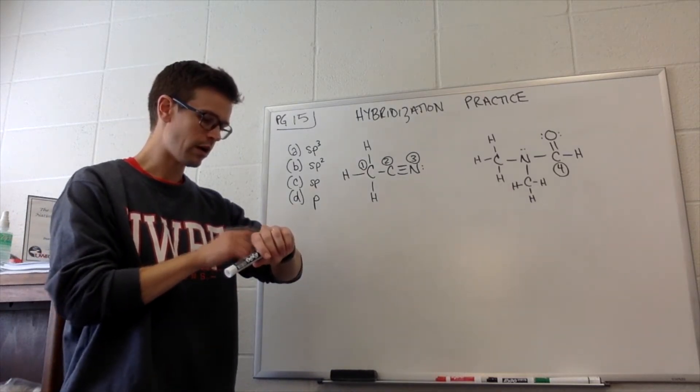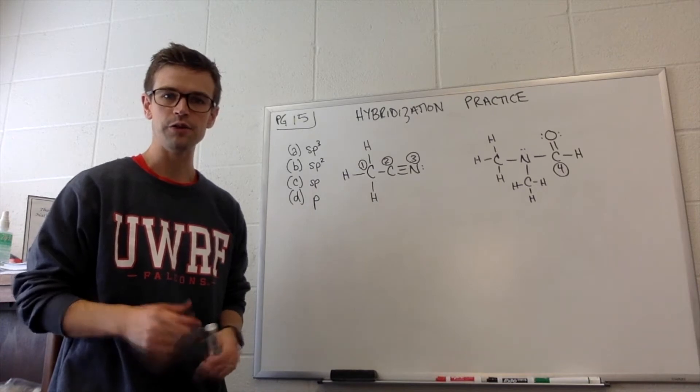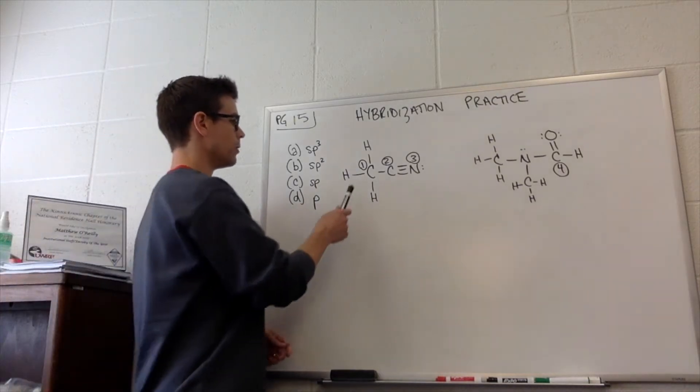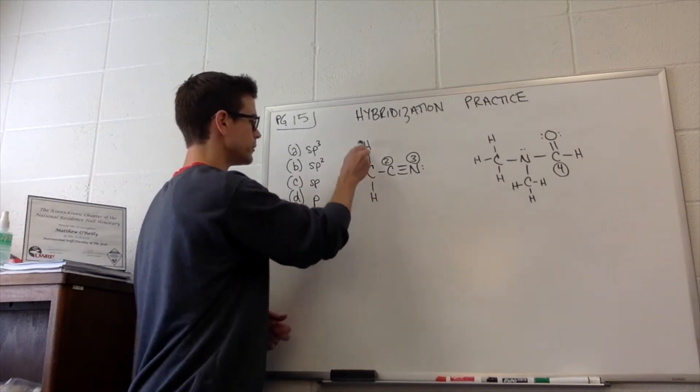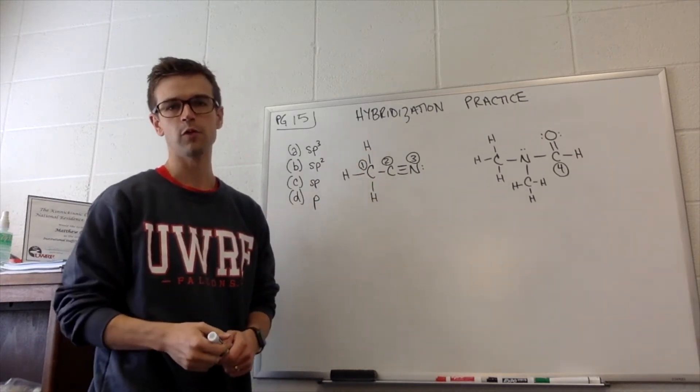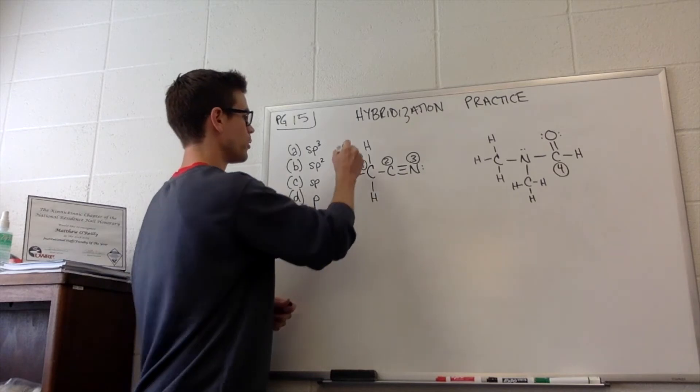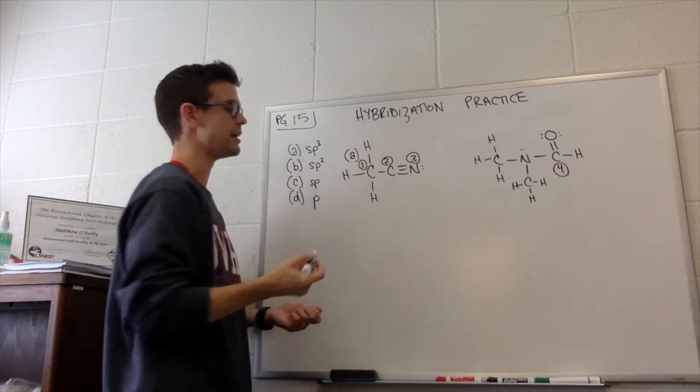All right, we are ready to do it now that you've done all that. So carbon 1 has how many groups? 1, 2, 3, 4. Four groups, it needs four hybrid orbitals. So number one would be A, sp3 hybridized.